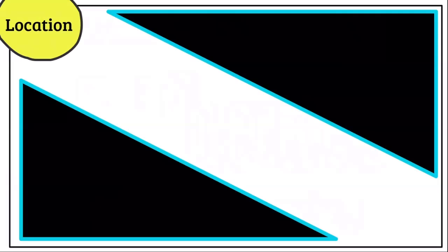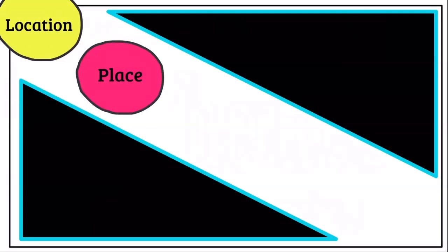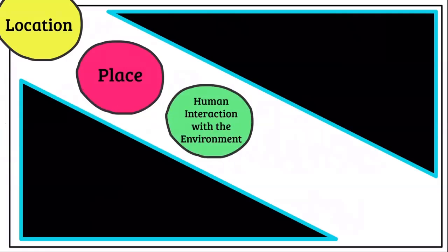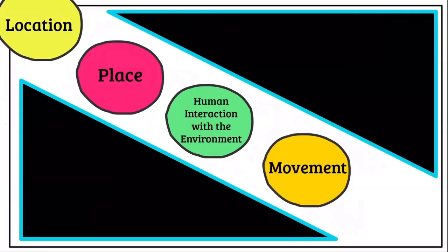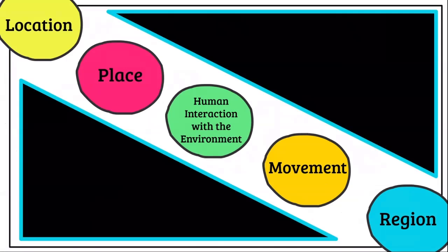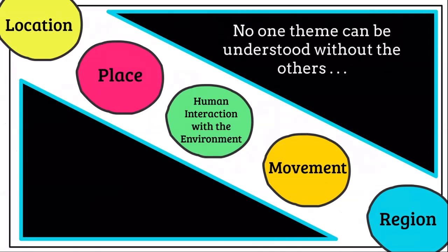The first theme of geography is location. The second theme is place. The third theme is human interaction with the environment. The fourth is movement, and the fifth is region. All five of these themes are important, and no one theme can be understood without the other themes.